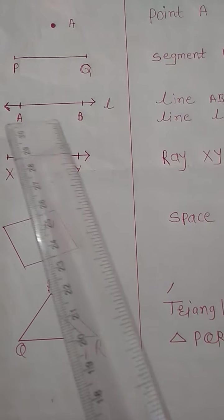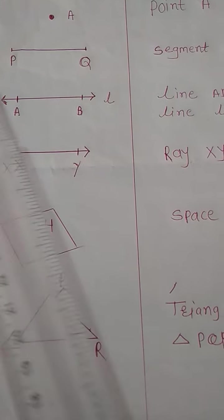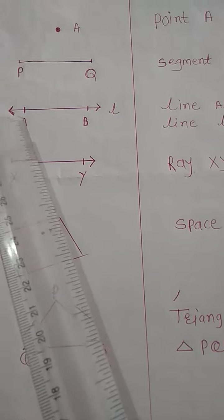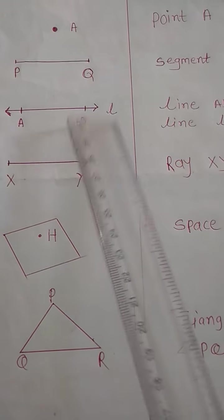Then, line. Line is read as line AB or line BA. Here, line is read using one letter. For example, line L.